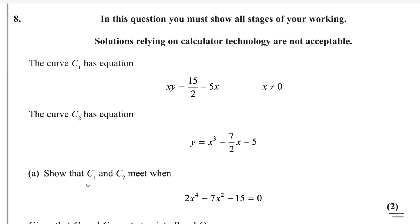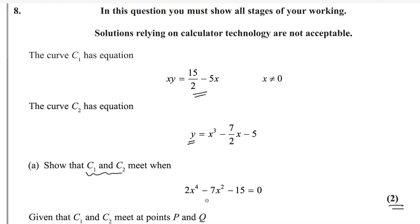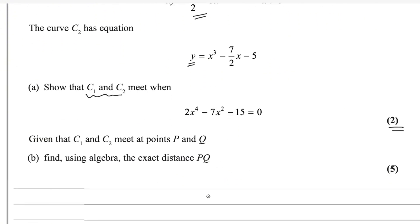We know that when C1 and C2 meet each other, there will be a point of intersection. To find the point of intersection, we will substitute the value of Y from C2 into the equation for C1. Everything will then be in terms of X and we will get the required result. Let me start the question here.